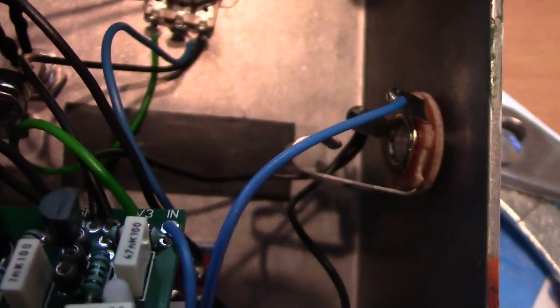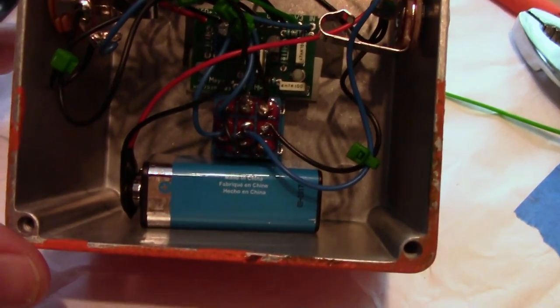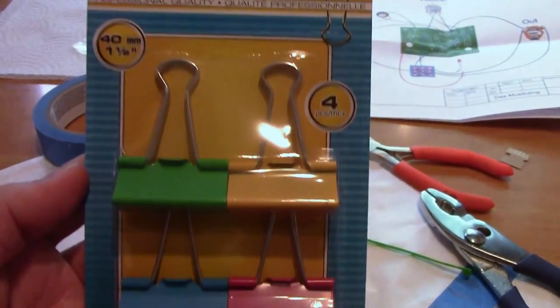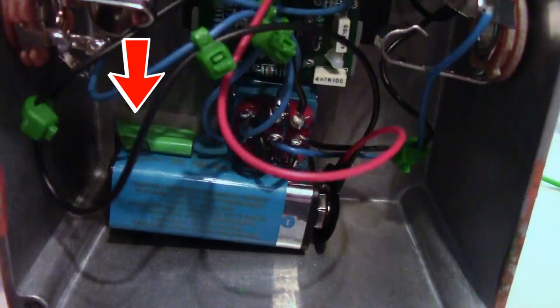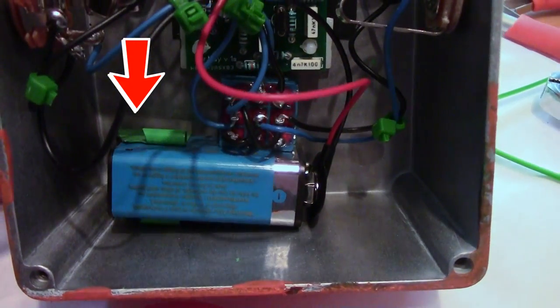To hold the 9 volt battery in the enclosure I used some paper binder clips and double-sided tape. I had to trim the clips to size but it worked.